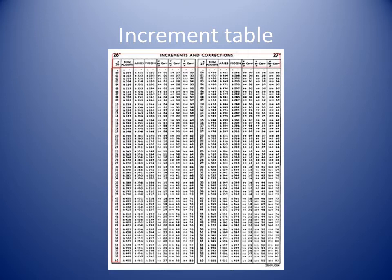This slide shows a page from the increment table at the back of the Nautical Almanac. The increment covers two minutes on a page and shows the increments for every second for the Sun, Planets, Aries, and the Moon. This slide shows the increments page for 26 and 27 minutes. The celestial bodies are highlighted in red at the top, and the seconds are highlighted in red on the left.